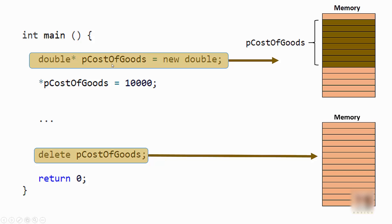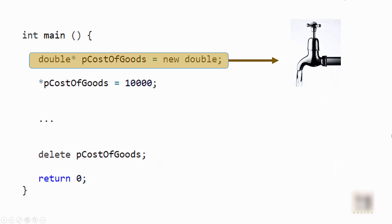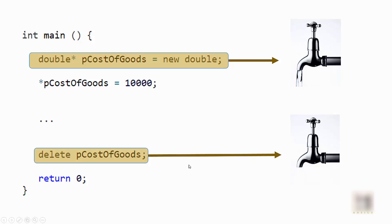Once it is done, it will call 'delete' on that pointer to free up the memory, so you can see that those 8 bytes got freed up. You can compare this situation with your water tap example: you open a water tap whenever you want to use water, so water is a resource. Similarly, in our program, memory is our resource. Whenever you are done using your memory, you delete it to clean it up — similarly, in the water tap example, you close your tap so that water doesn't leak and your resource doesn't get wasted.